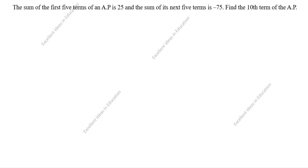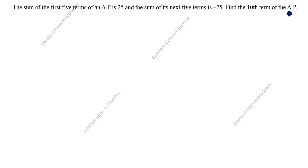Hi friends, welcome to my channel Excellent Ideas in Education. Today we are going to solve this arithmetic progression problem. This is a board exam problem. The sum of the first five terms of an AP is 25, and the sum of its next five terms is minus 75. Find the 10th term of the AP.